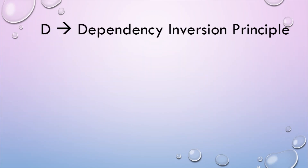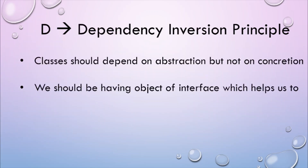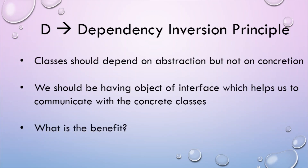The last one is the Dependency Inversion Principle. This principle suggests that classes should depend on abstractions, not on concrete implementations. What this means is that we should have objects of an interface which help us communicate with the concrete classes. What do we gain from this? We hide the actual implementation of class A from class B, so if class A changes, class B doesn't need to care about those changes. That is the benefit of using the Dependency Inversion Principle.